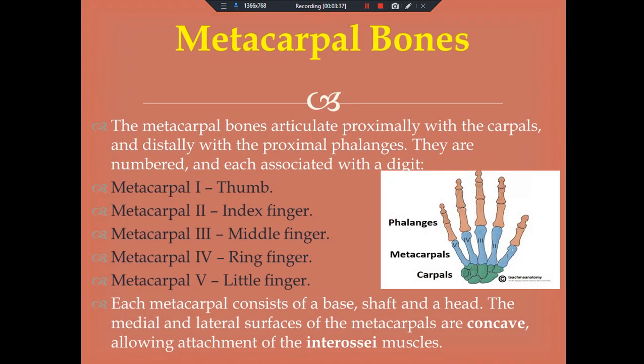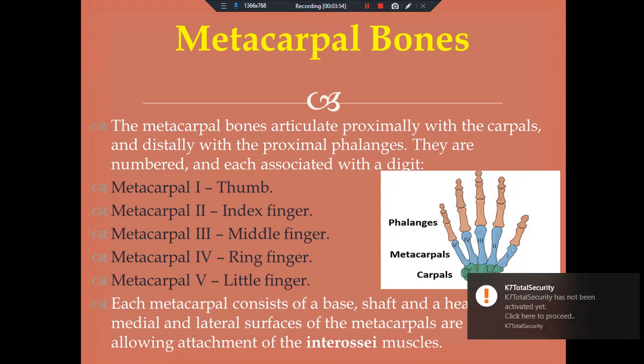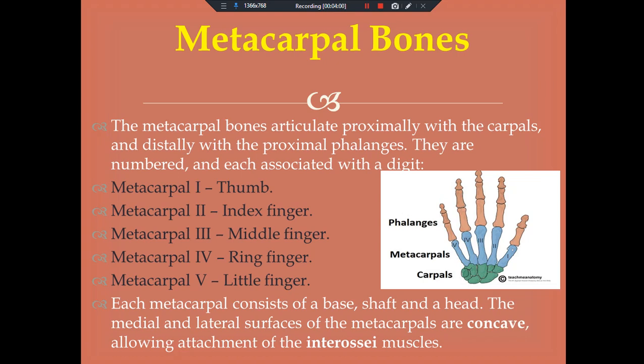The metacarpal bones articulate proximally with the carpals and distally with the proximal phalanges. They are numbered and each associated with a digit: metacarpal one is the thumb, metacarpal two is the index finger, metacarpal three is the middle finger, metacarpal four is the ring finger, and metacarpal five is the little finger. Each metacarpal consists of a base, shaft, and a head. The medial and lateral surfaces of the metacarpals are concave, allowing the attachment of the interosseous muscles.